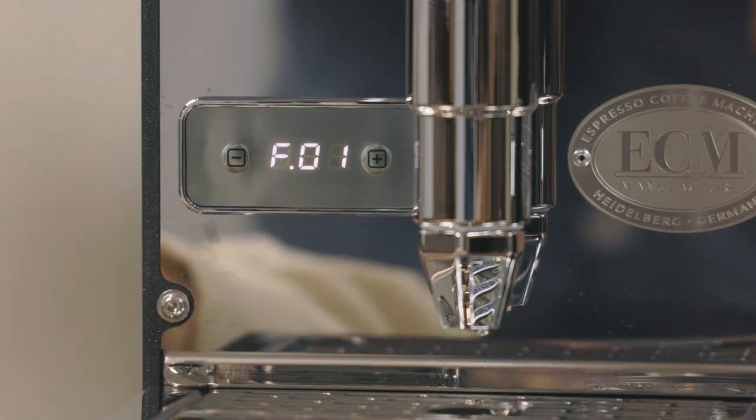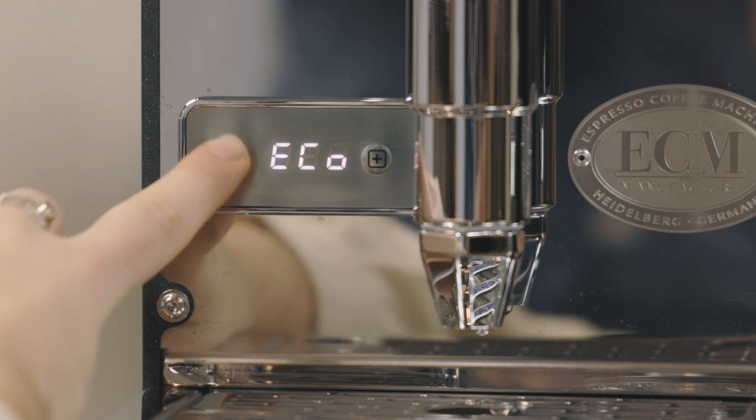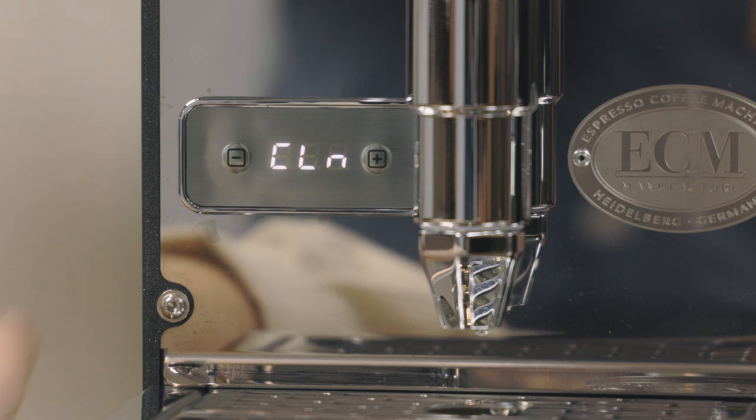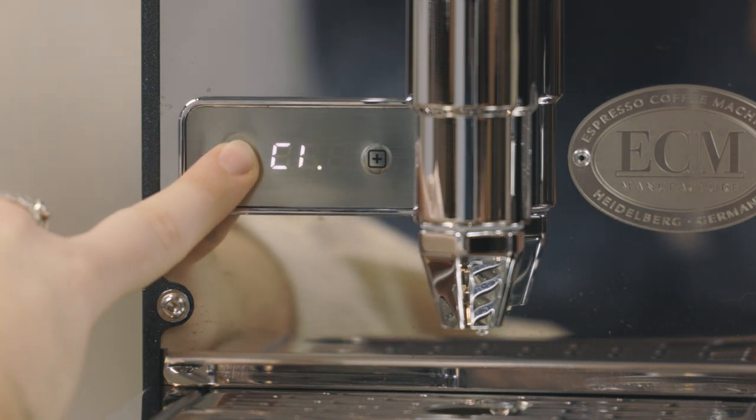In the settings of the PID, you can choose between Fahrenheit and Celsius, program Eco mode to automatically turn off your machine, program cleaning reminders, and adjust the temperature of the coffee boiler.